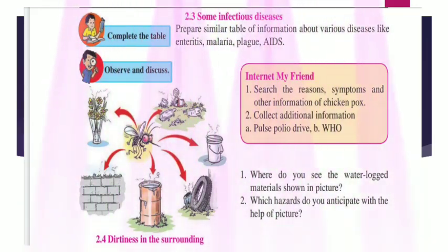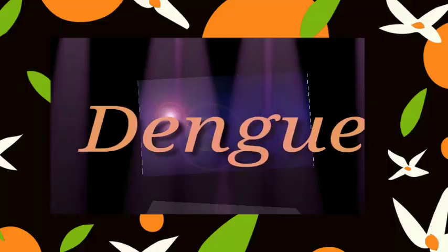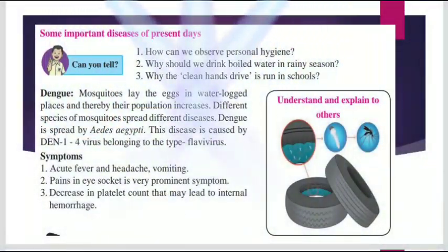See students — dirtiness in the surroundings. Where do you see the waterlogged material shown in the picture? Which hazards do you anticipate from this picture? Mosquitoes lay their eggs in waterlogged places, and thereby their population increases. Different species of mosquitoes spread different diseases.